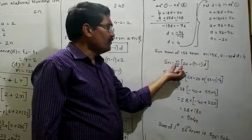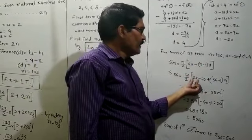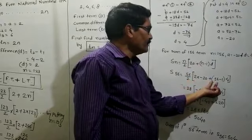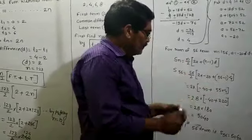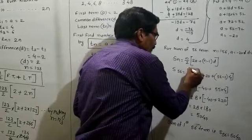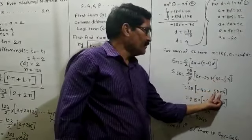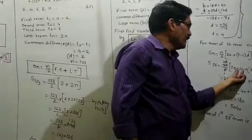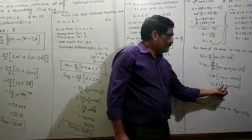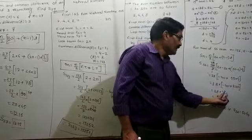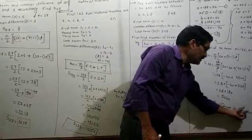Utilize the formula SN equals N upon 2 into bracket 2A plus N minus 1 into D. S56 equals 56 upon 2 into 2 multiplied by minus 20, plus 56 minus 1 into 4. 56 divided by 2 is 28, and 2 multiplied by minus 20 equals minus 40. Then 56 minus 1 is 55, and 55 multiplied by 4 equals 220. So 28 multiplied by minus 40 plus 220 equals 28 multiplied by 180, which equals 5040. Therefore, S56 equals 5040.